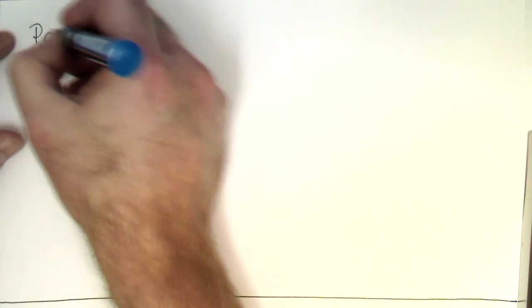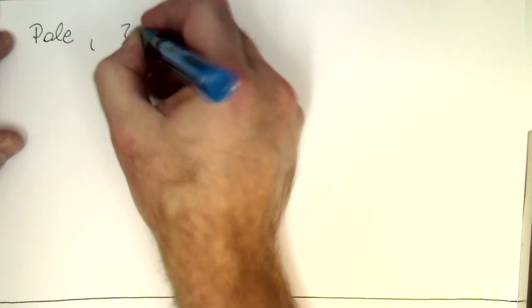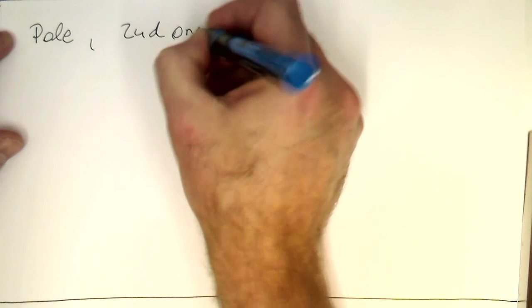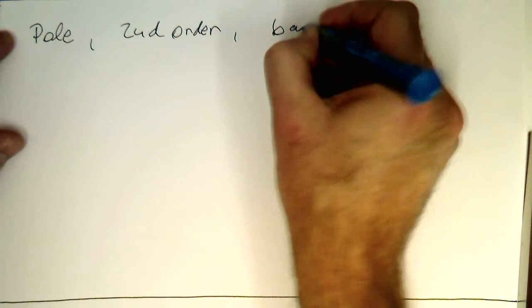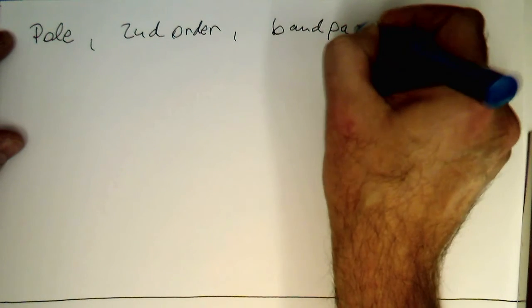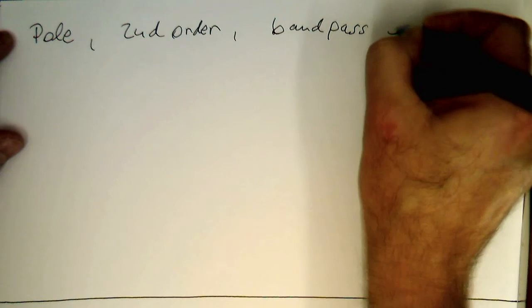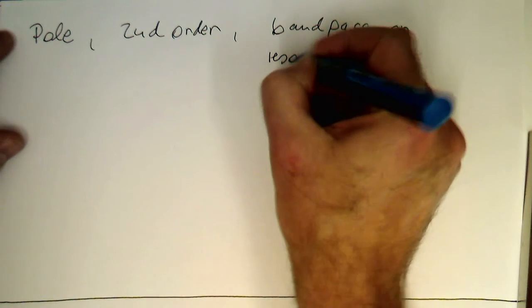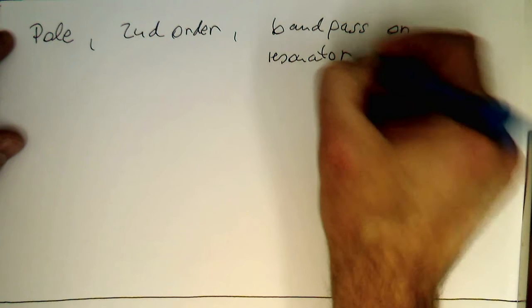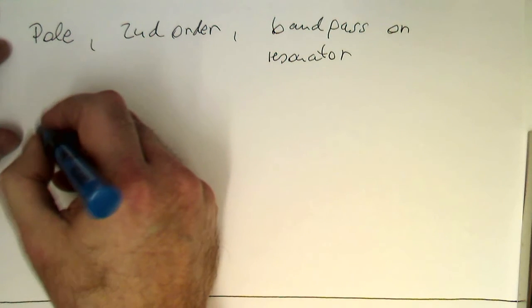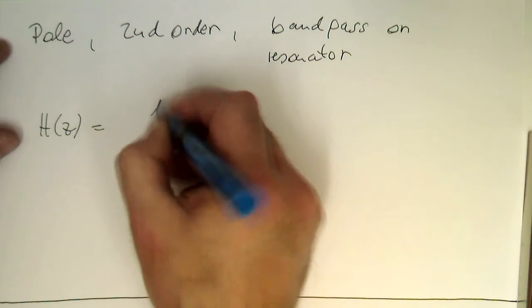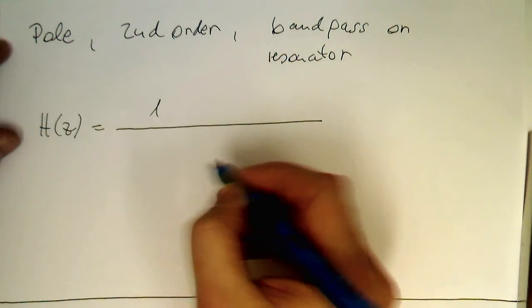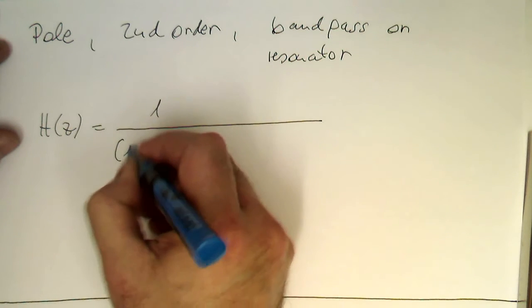So what we are creating is now a pole, second order, and it acts as a bandpass or resonator. And remember, our definition of that was the following. So now we are first ignoring the FIR part here, and just working with the pole.